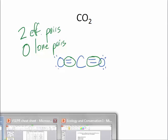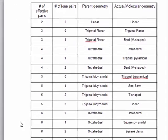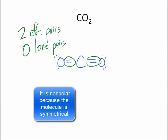So again, we look on our chart. So two effective pairs and no lone pairs means that it's linear as the parent geometry. And the actual geometry is also linear. And you draw it in a straight line like this.